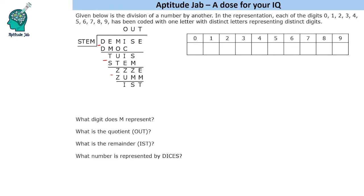We use digits zero to nine — all digits are being used. The easiest to identify first: I minus C gives us I, which means C is zero. That is the easiest of all. The second easiest involves STEM multiplied in different steps.